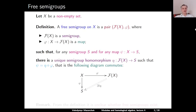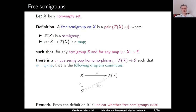Such that ψ equals η after φ. In other words, the following diagram commutes: we have X, F(X) and the map φ, and X, S and the map ψ, and there should exist a unique semigroup homomorphism η from F(X) to S such that φ then η equals ψ. Remark: directly from the definition, it is not clear whether free semigroups exist, but we will prove their existence later.